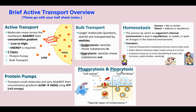Pinocytosis is cellular drinking — moving in large amounts of water at a time. These are both specialized types of endocytosis. A way to differentiate pinocytosis from phagocytosis: if you drink a lot of water, you have to pee — pinocytosis. Both phagocytosis and pinocytosis are types of endocytosis because things are coming into the cell.